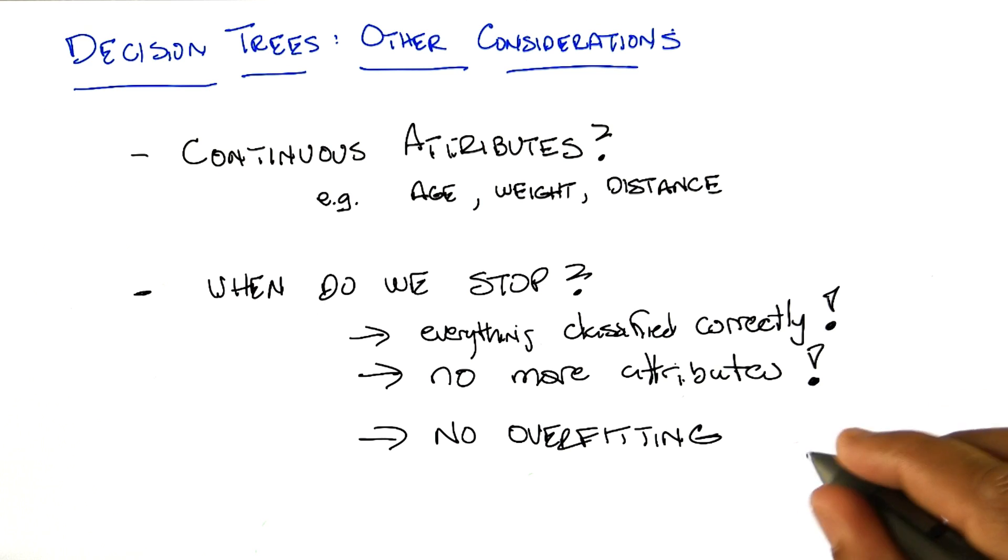Right. So, maybe we could do something like that. I don't know. Try all the different trees and see which one has the lowest cross-validation error. Maybe there's too many trees.